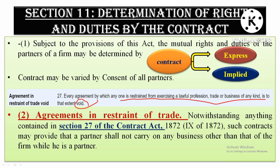Section 11 says that, in addition to the partnership contract, partners can be restrained from carrying on any other business, profession, or trade other than that of the firm while they are a partner. Such an agreement, though void under section 27 of the Contract Act, is valid here because the Partnership Act is a special law, and the special law will prevail and override section 27 of the Contract Act.